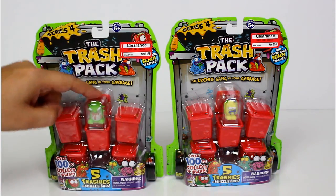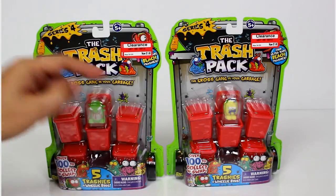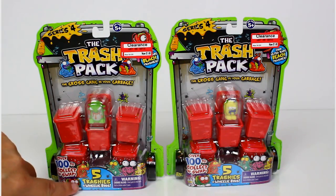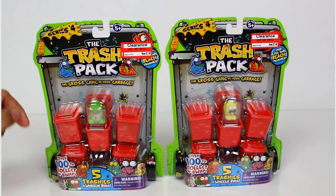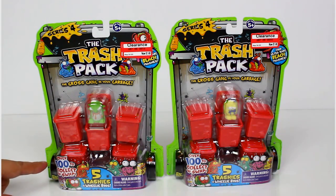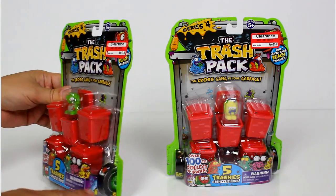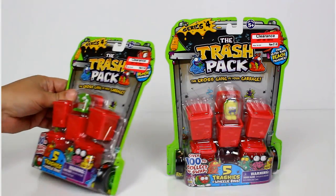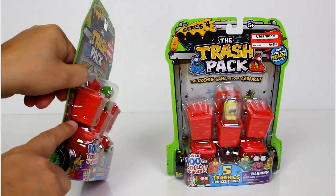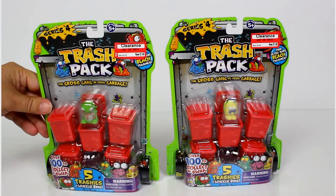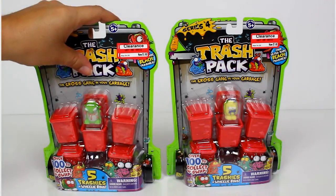You get five trashies in here - one visible one and four mystery ones. The five trashies come in wheelie bins. Did you see the card in the back that looks like a garbage can? And there's little wheels on the side so it looks like one of the wheelie garbage cans.